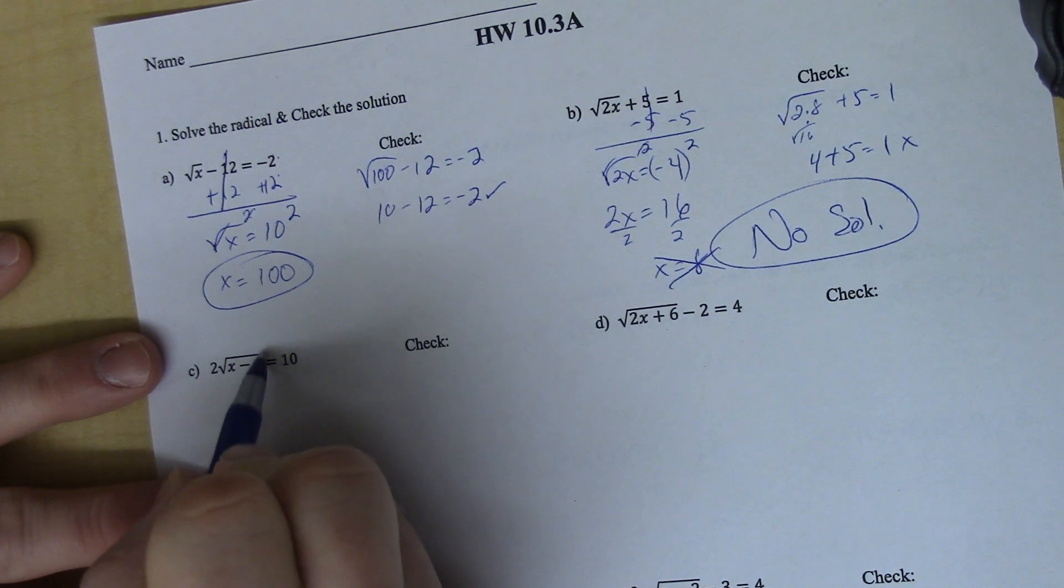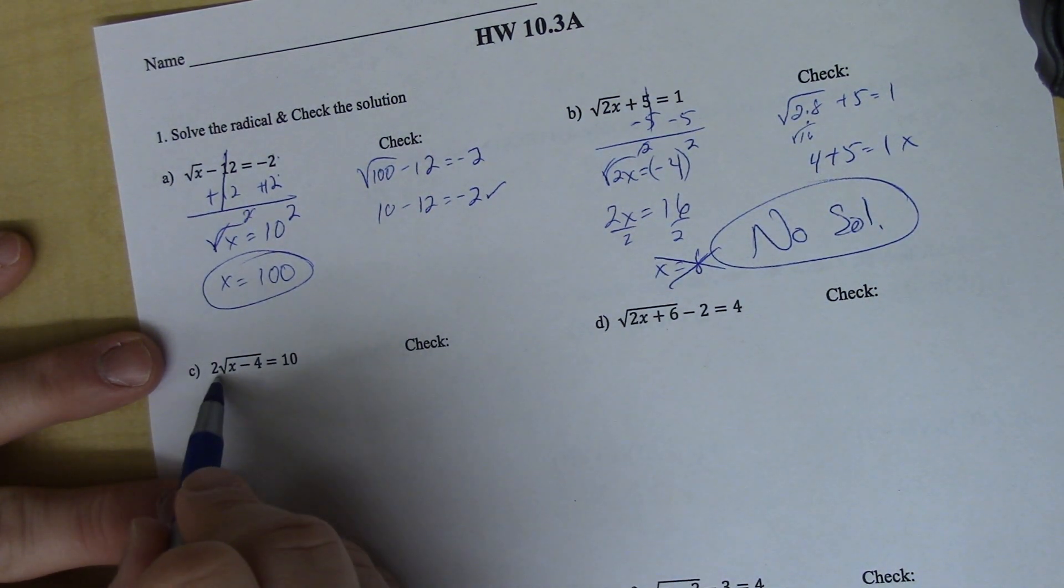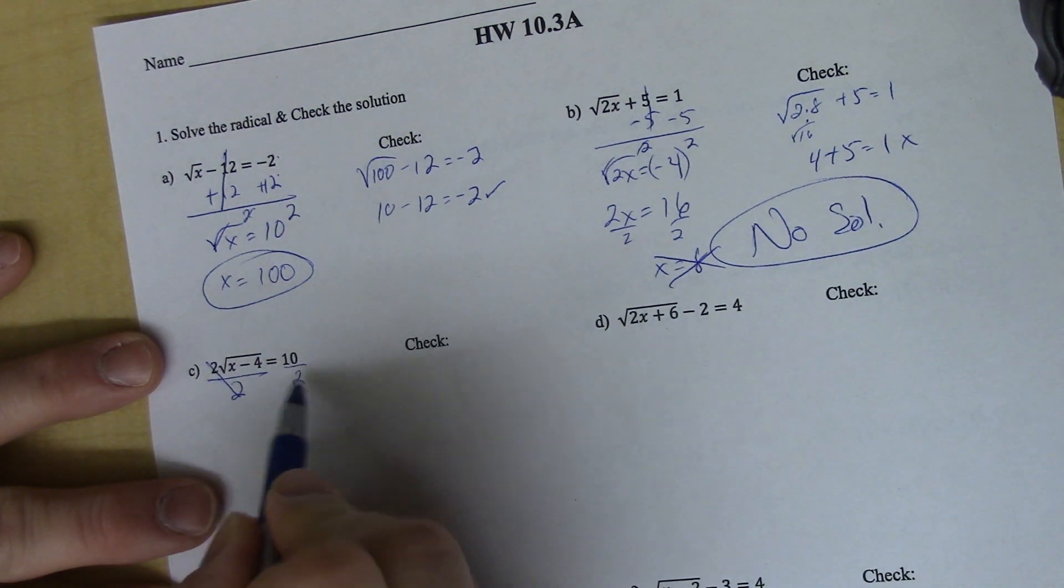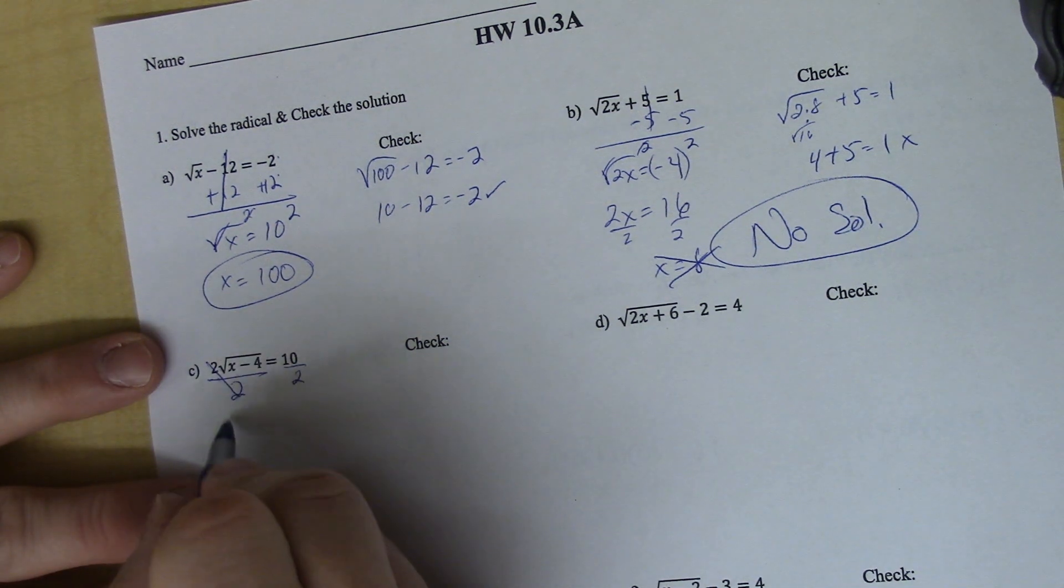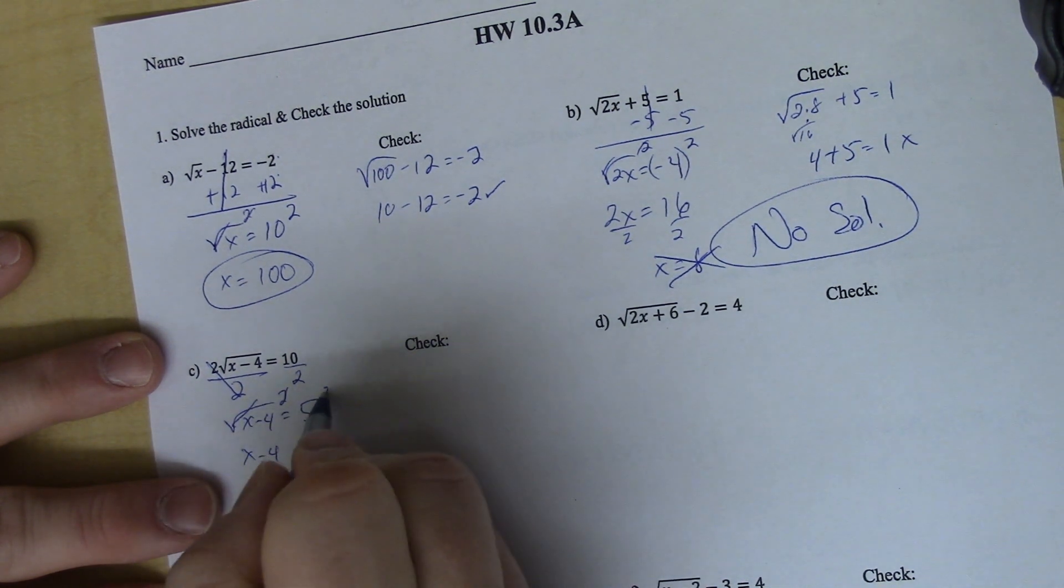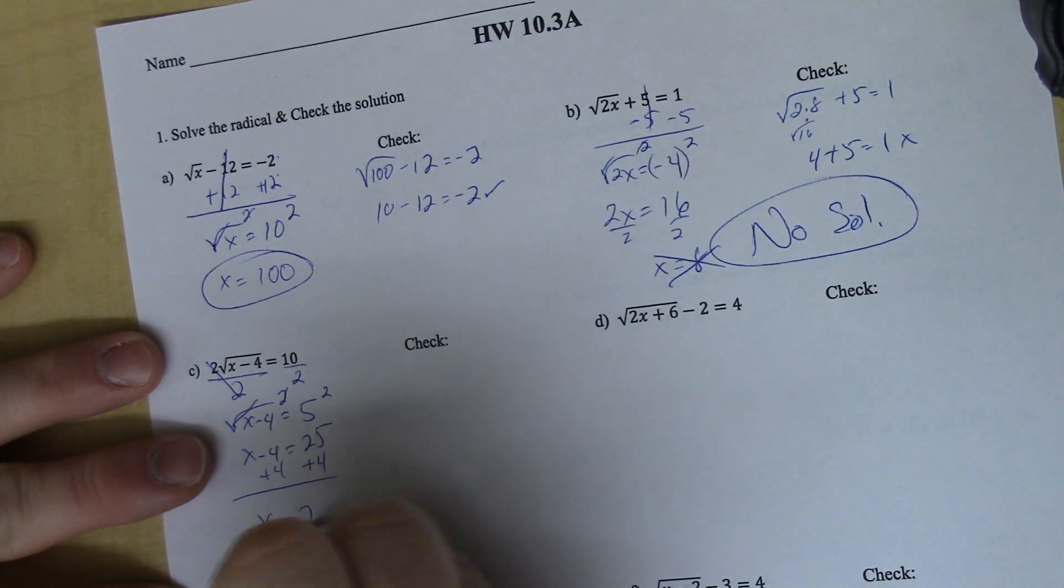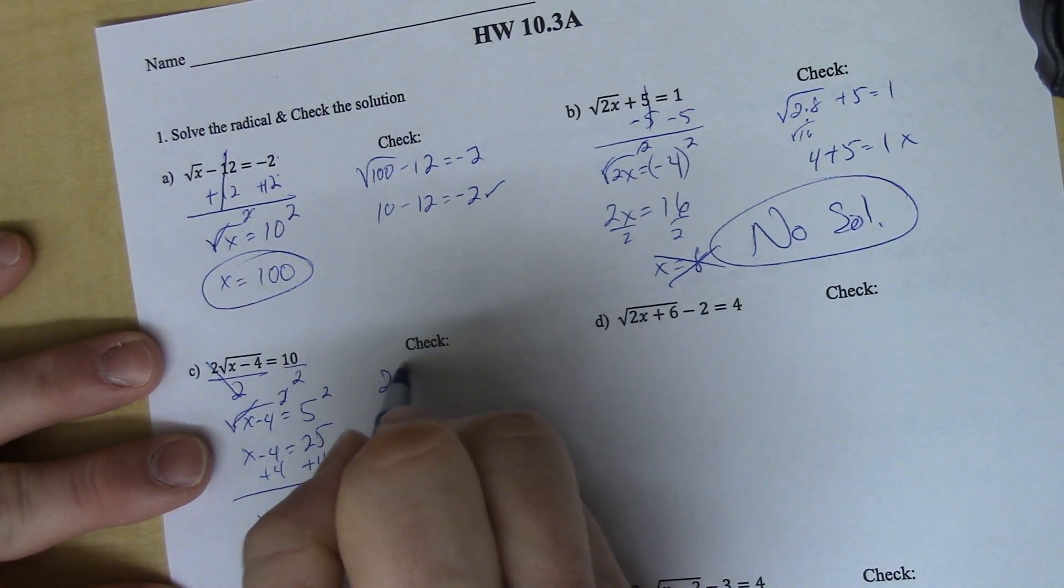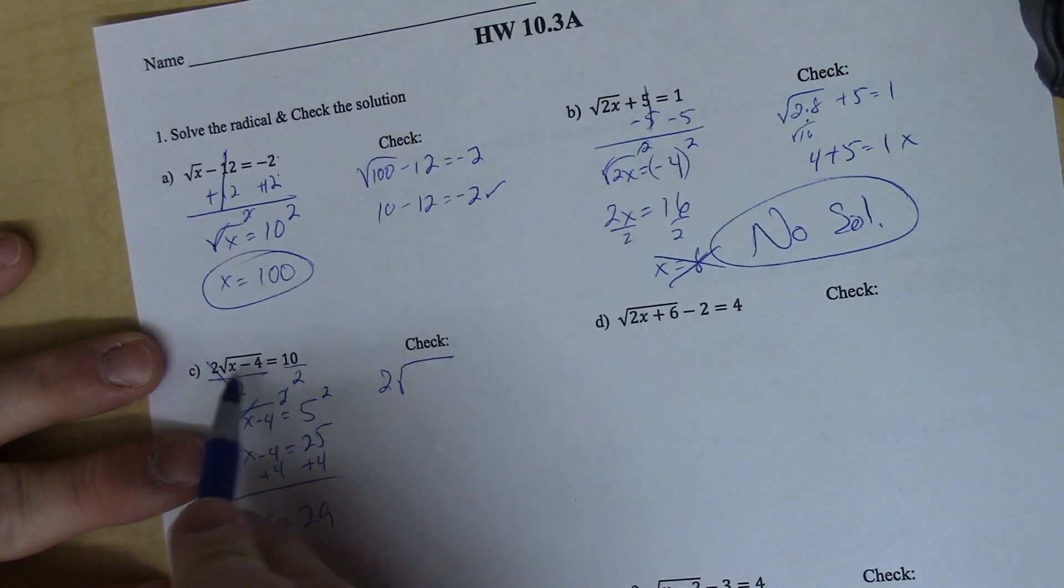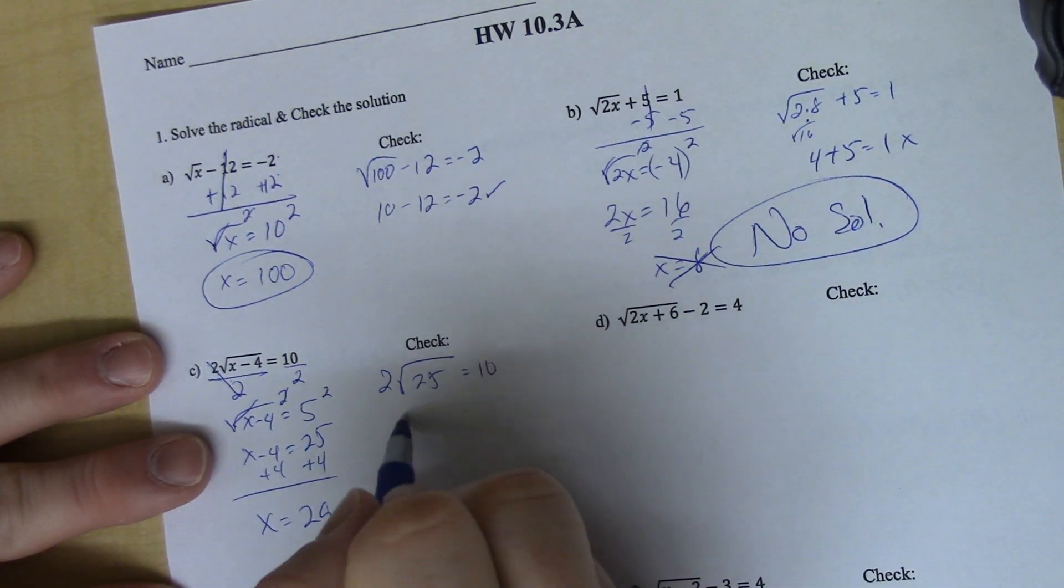There's nothing to add or subtract that's not inside the square root side. So I go right to multiply or divide, and the opposite of multiplying by 2 here is to divide both sides by 2. We always got to get rid of that stuff that's outside of the square root first. So I get square root of x minus 4 equals 5, and now I have the square root by itself, so I square both sides to get those to cancel and get 25, and then I just add 4 to both sides to get x equals 29. Go back and plug it in. 2 times the square root, 29 minus 4 is 25 equals 10, and sure enough, 2 times 5 equals 10. It checks.